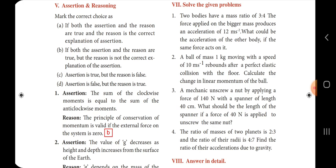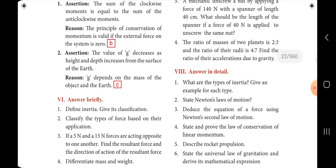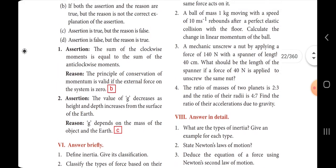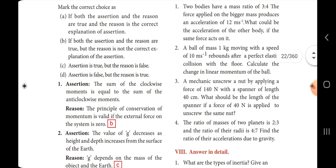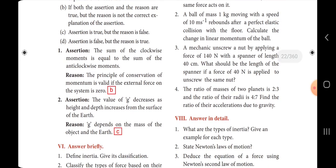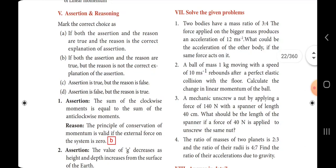Second one: assertion — the value of g decreases as height and depth increase from the surface of the Earth. Reason — g depends on the mass of the object and the Earth. The answer is option C: assertion is true but reason is false. In this video we have covered all one-mark questions. In part 2 we will cover two-mark and detail questions. I hope you liked this video, thanks for watching.